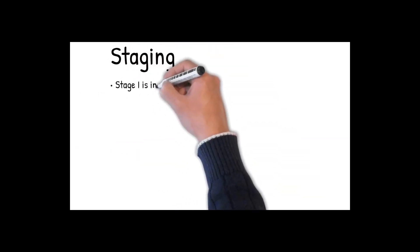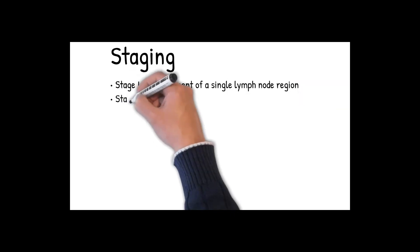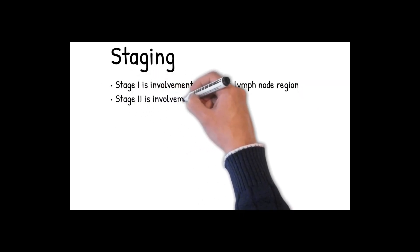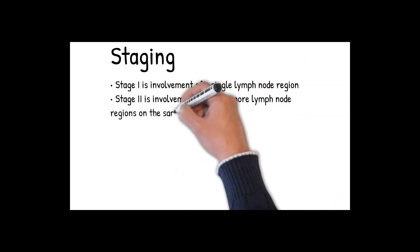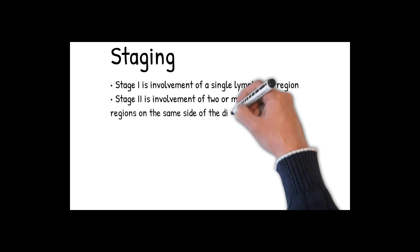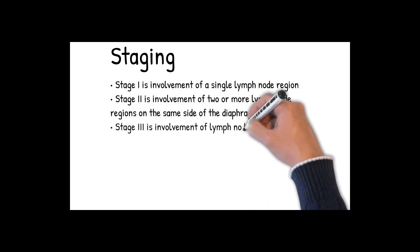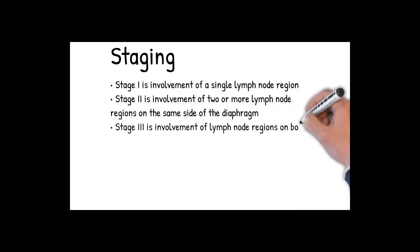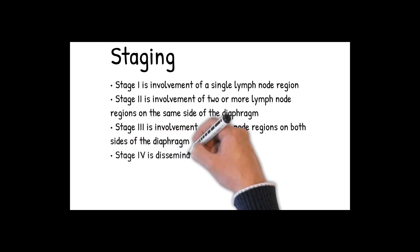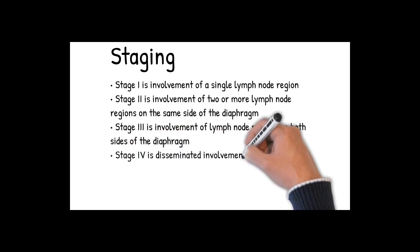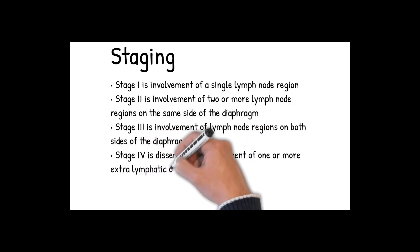Stage I is involvement of a single lymph node region. Stage II is involvement of two or more lymph node regions on the same side of the diaphragm. Stage III is involvement of lymph node regions on both sides of the diaphragm. Stage IV is disseminated involvement of one or more extra-lymphatic organs.